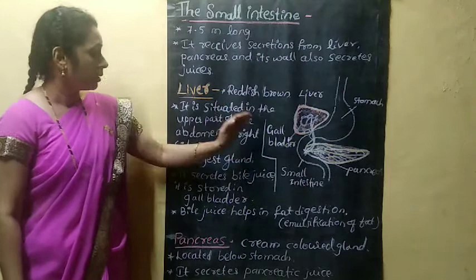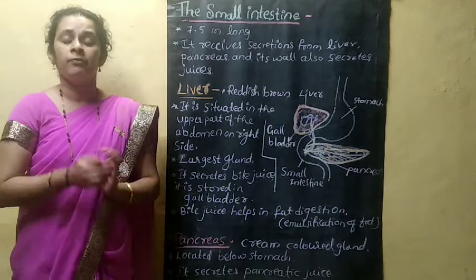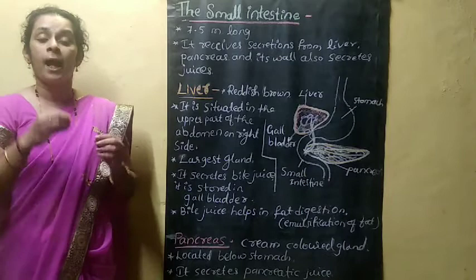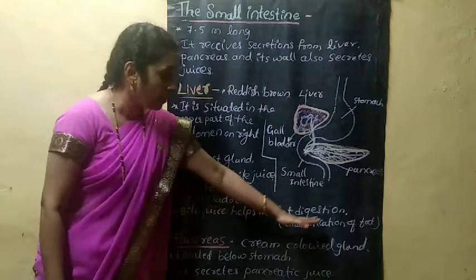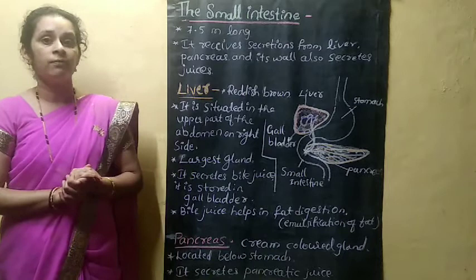Bile juice secreted by the liver helps in fat digestion. Mainly fat digestion starts with the help of bile juice. Bile juice acts on fat molecules and converts complex fat molecules into simpler fat molecules. That process is called emulsification of fat. So bile juice helps in the emulsification and digestion of fat.